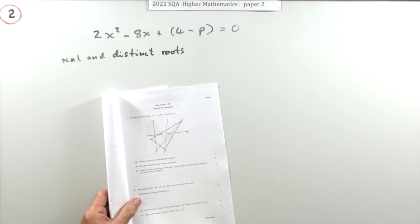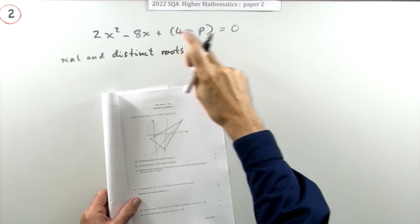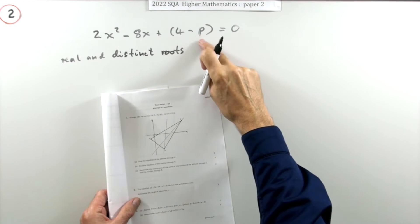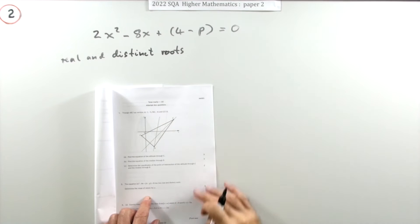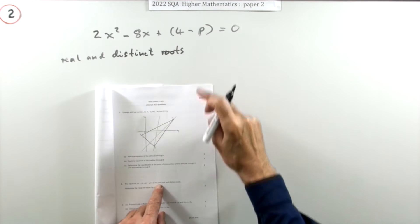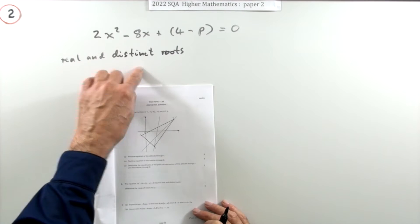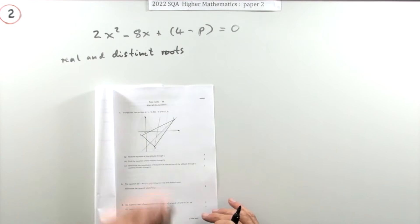Question two from the 2022 higher math paper two. Three mark question, a quadratic equation with unknowns in the coefficients. This is one of those discriminant questions. This equation has to have two real and distinct roots. Well, if they were distinct, there'd have to be two of them because it's a quadratic.